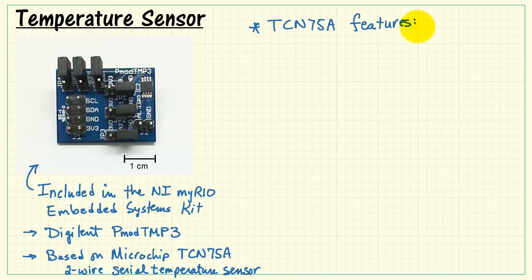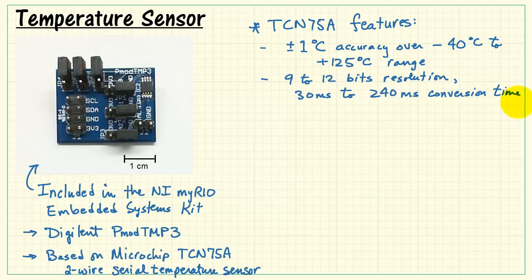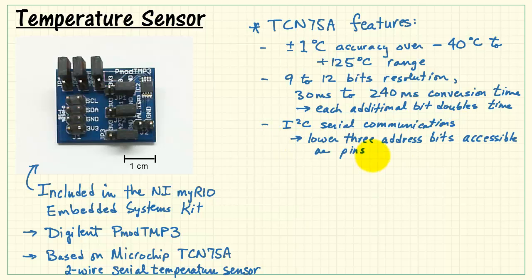Let's take a quick look at the primary features of this sensor. It has 1 degree accuracy over a wide temperature range, 9 to 12 bits resolution taking anywhere from 30 to up to 240 milliseconds conversion time. Each additional bit doubles the time. This is based on I2C serial communications.